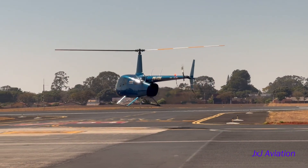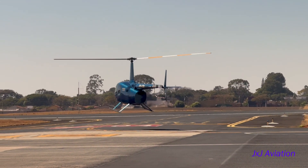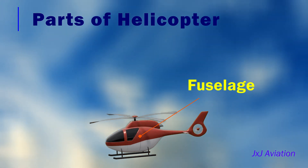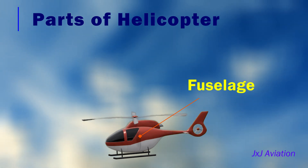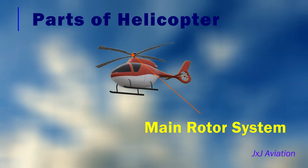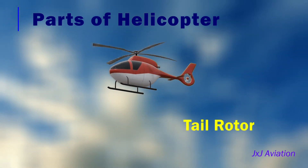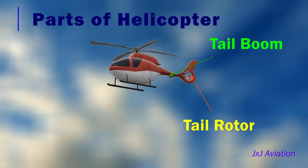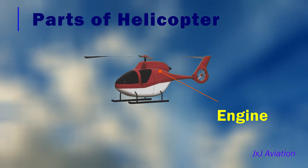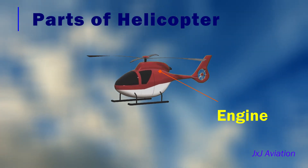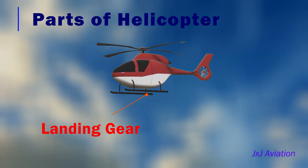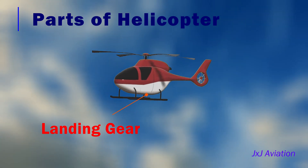Before we look at how helicopter flight is possible, we need to look at the parts of a helicopter. This is the fuselage, which holds the cockpit, crew, passengers, and cargo. This is the main rotor system, which generates the lift. This is the tail rotor, installed at the end of the tail boom. The engine is installed in the fuselage and is connected to a transmission system that transfers power to the main rotor. This is the landing gear, which is often skids. It is used to support the weight of the helicopter on the ground.